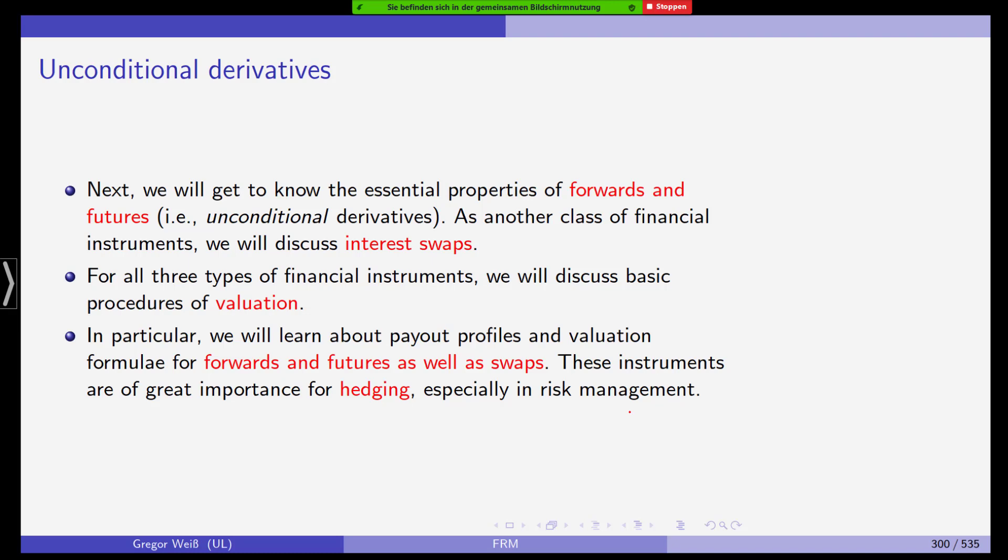And then, last but not least, we will have a look at interest swaps. Now, for all three types of financial instruments, we will discuss basic procedures for valuation. And in particular, we will learn about payout profiles, pricing formulas and then, of course, forwards and futures. They can also be used in hedging and risk management. And actually, many times, companies will stick to the basic instruments: futures, forwards and plain vanilla options. It's very hard to see companies using exotic options in risk management because usually they are just too complicated and difficult to price and not very liquid. But you will stick to your easy instruments, forwards, futures, plain vanilla options.